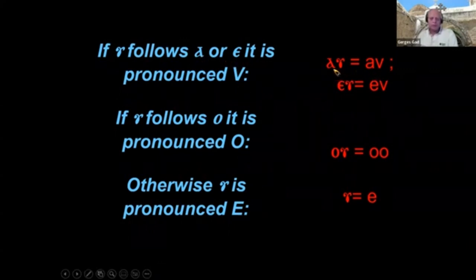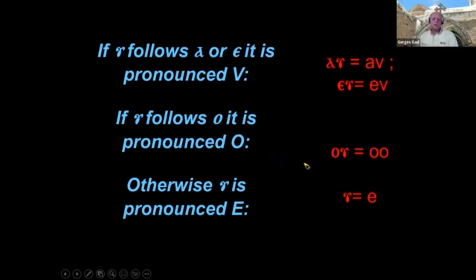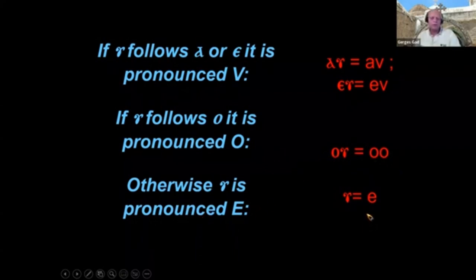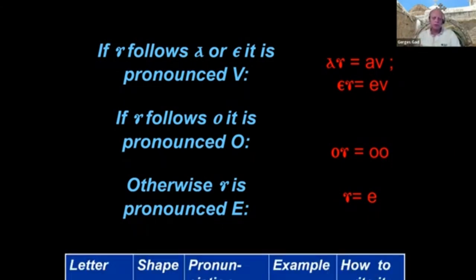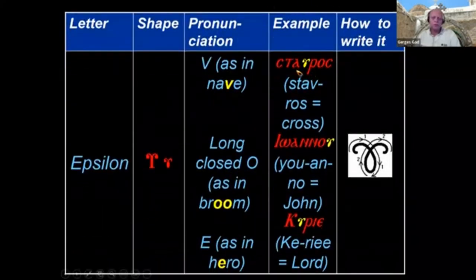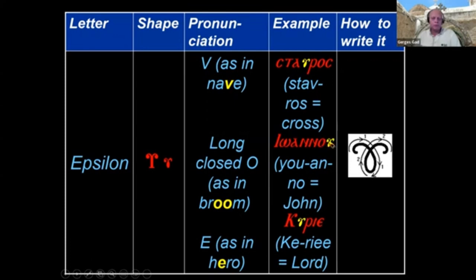If Epsilon follows an Alpha or an E, it's a V — so after Alpha it's 'af,' after E it's 'ev.' If it follows an O, it makes a longer O sound. And anything else, it's an E. In 'Yota-O-Alpha-Na-Na-O-Epsilon,' it's an O, giving 'uano.' And in the Kappa-E-R-I-E example, it's an E — like 'Kiriya,' as in 'Kyrie Eleison' — Lord. So: after A or E → V; after O → O; anything else → E.